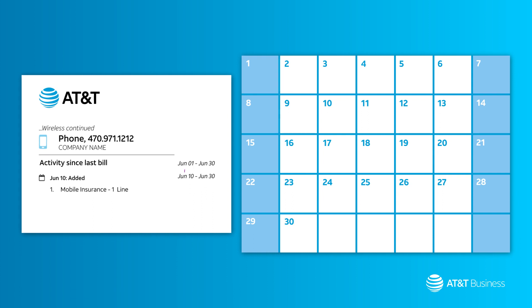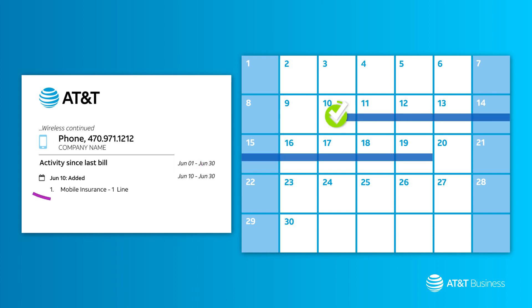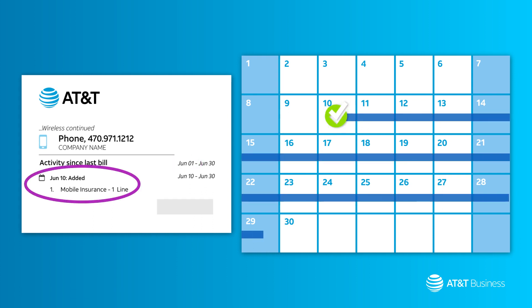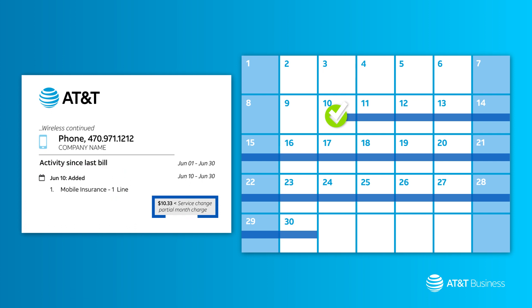Let's say your bill period starts on the 1st of the month and you add mobile insurance on the 10th. When you get your next bill, you'll see partial charges for mobile insurance starting on the day you added that feature.